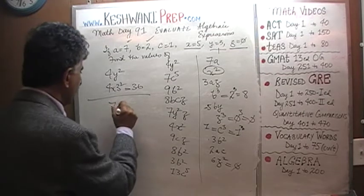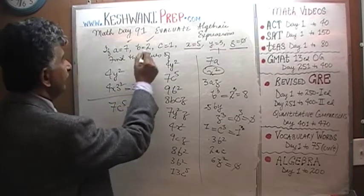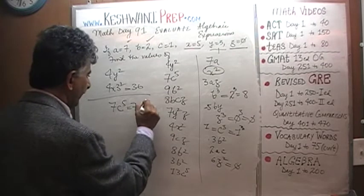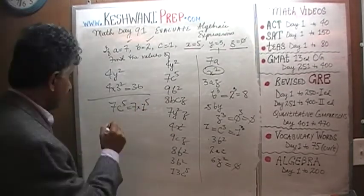7C raised to 5, 7C raised to 5, C is 1, so it's just 1 raised to 5. 1 raised to 5 is just 1, it's just 7.